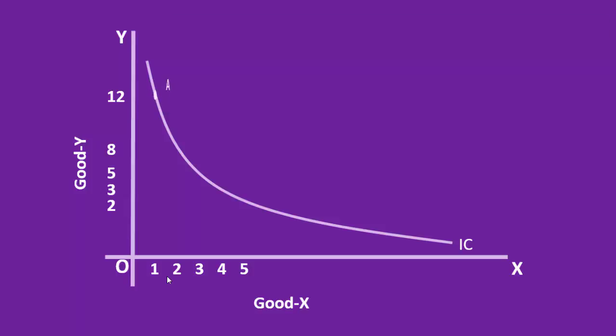To begin with, the consumer has combination A. It contains twelve units of good y and one unit of good x. He wants to get one additional unit of good x. Only by offering what he has with him can he get it. He has twelve units of good y. He gives away four units of it and gets one unit of x.